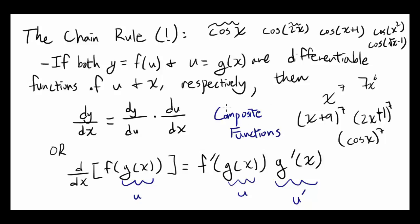A composite function is a function that has a function within itself. Like cosine of 2x — you have 2x, a function of x, within. Cosine of x plus 1 is the same way: x plus 1 is the inner function, and taking the cosine of that is the outer function.